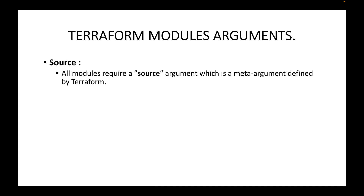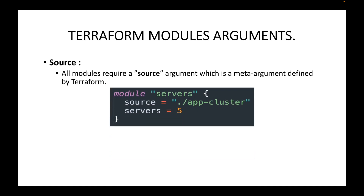Whenever we are defining the module block, we have to give the source argument specifying what we want to use — whether a local path or a published module to create infrastructure. Here in this example, we are defining the module block with the source argument, and in this case I am using the local path for creating the infrastructure.